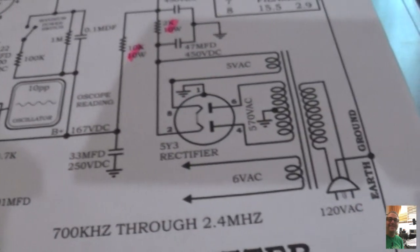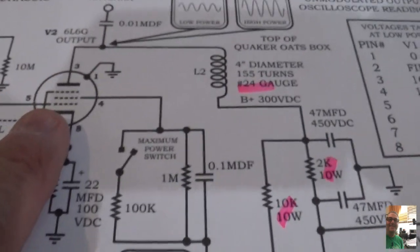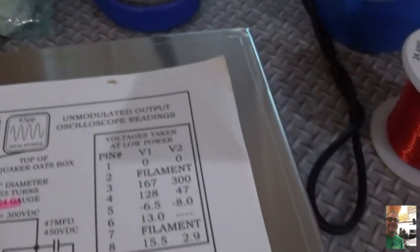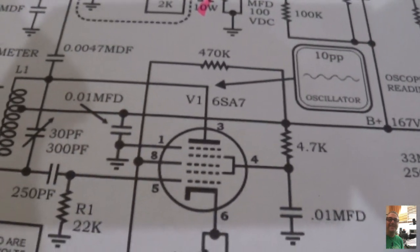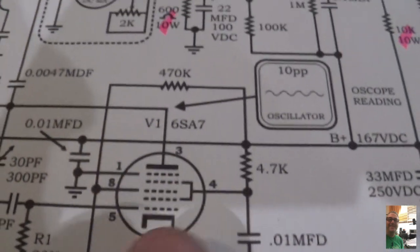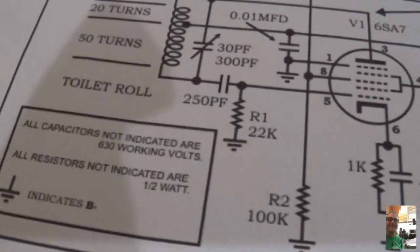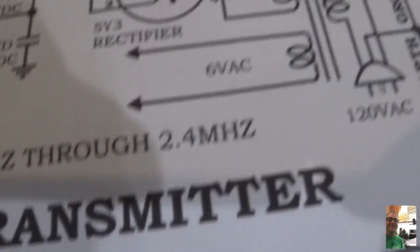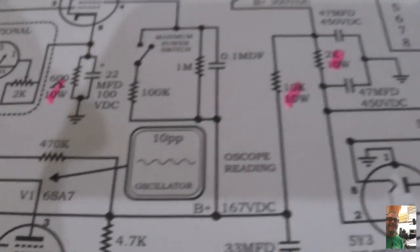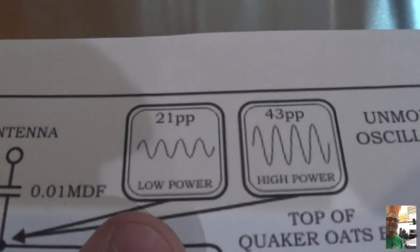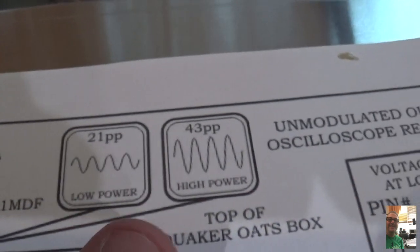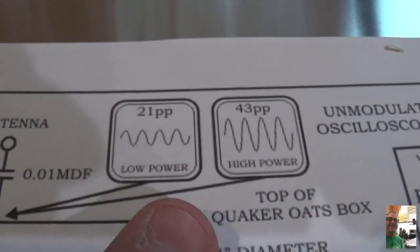Other than that, it's pretty simple. You've got a 6L6G output tube, your 5Y3 rectifier, and your 6SA7 mixer. Pretty straightforward, really not much to this thing. It's pretty simple and you have a standard antenna. It even gives you the waveforms when you have high power and low power.